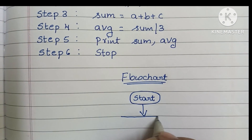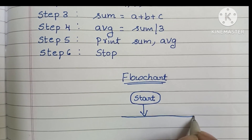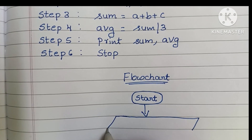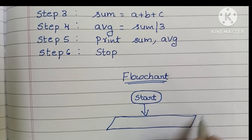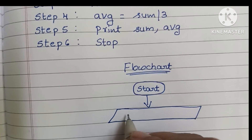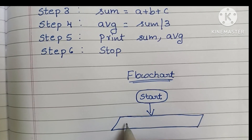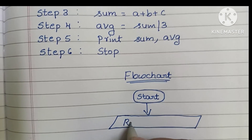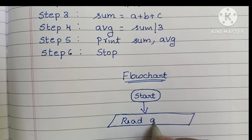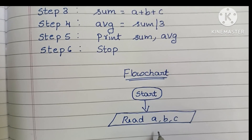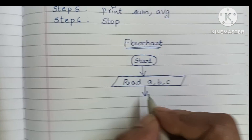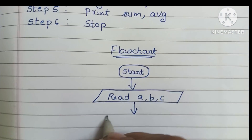Input values are always written within a parallelogram shape. So we draw a parallelogram and within it we write: read a, b, c — the three numbers.